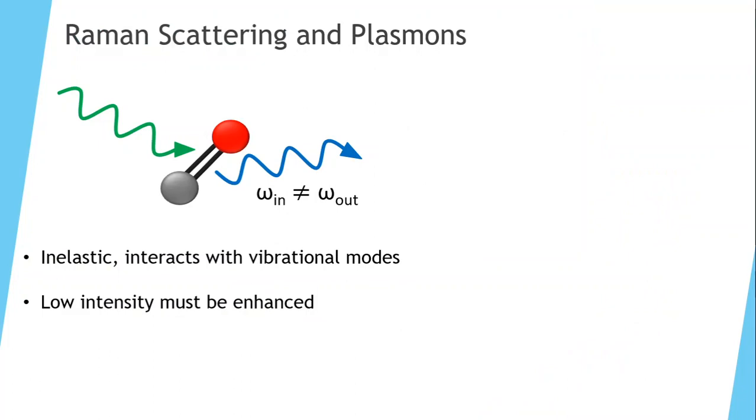When light interacts with a material, it can do so through scattering, which is the absorption and subsequent emission of a photon by the material. This can happen inelastically in which the emitted photon is at a different energy than the incident light. This is called Raman scattering and is due to interactions with the vibrational modes of the molecule. These vibrational modes create a much finer spectra that can allow us to identify single molecules, making it a very useful technique.